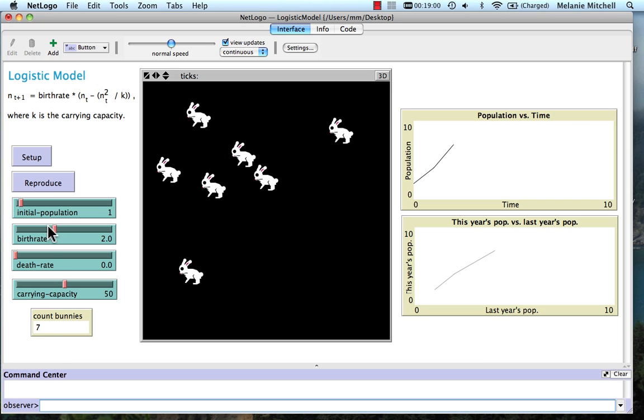But now let's set the initial population to five, that is five times the original. Do set up and again run for three time steps.